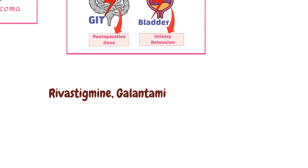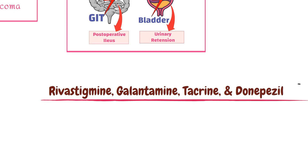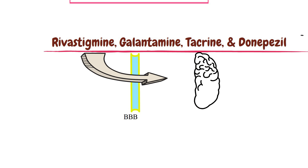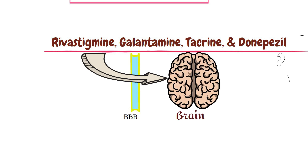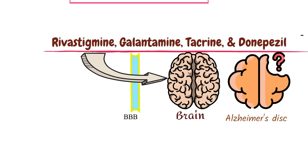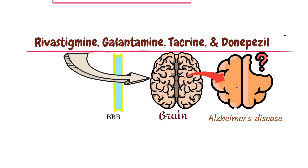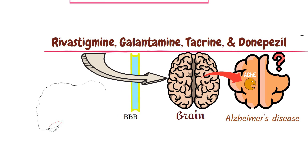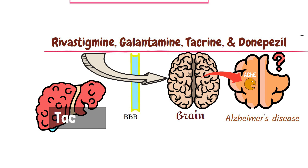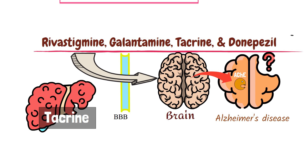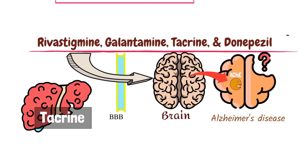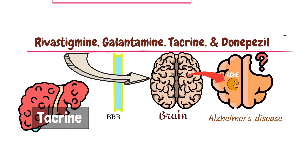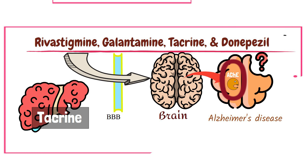Rivastigmine, galantamine, tacrine, and donepezil are cholinesterase inhibitors that can cross the blood-brain barrier, which is why they are used for delaying Alzheimer's disease, which is a neurodegenerative disease of cholinergic neurons of the central nervous system. These drugs help by extending the duration of acetylcholine's action in the CNS. Among these drugs, tacrine is no longer used because of its hepatotoxic property. These agents are considered relatively selective inhibitors of CNS cholinesterases.